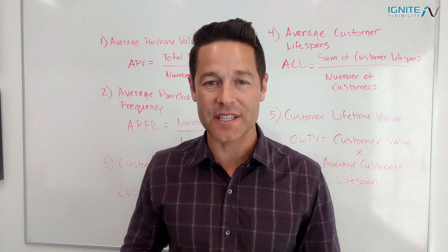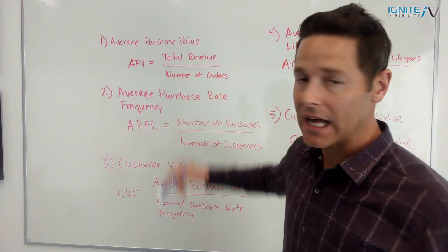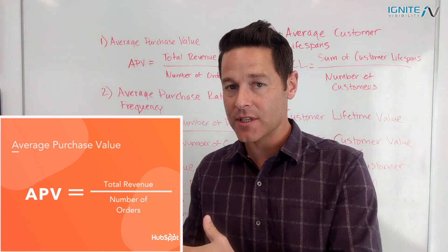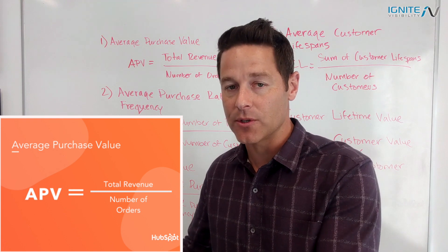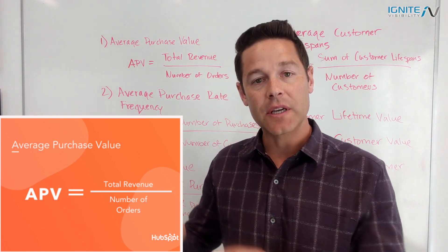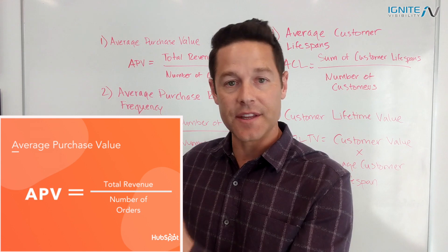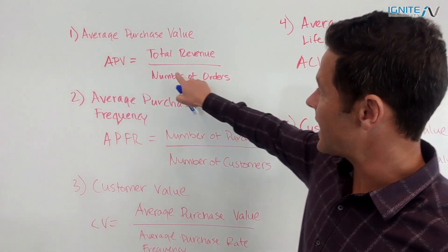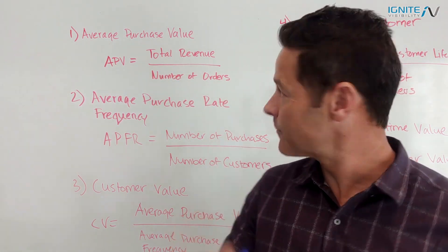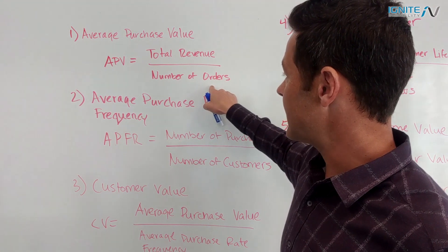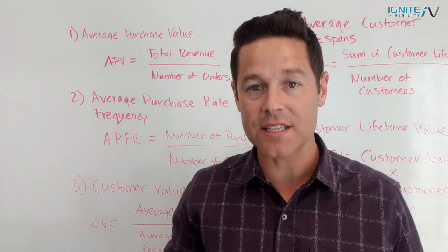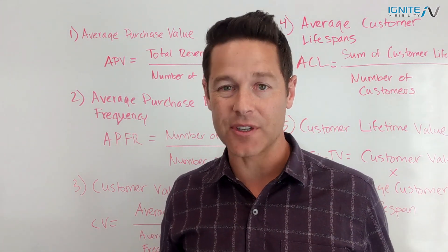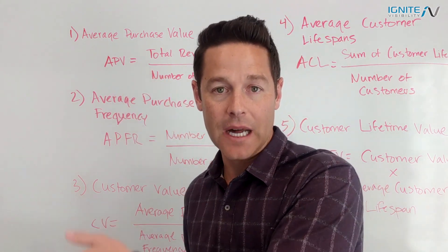Number one is average purchase value. Average purchase value is the average amount that somebody spends when they make a purchase. That's really important because you can know that number and back it into things like your return on ad spend. Average purchase value is calculated as total revenue divided by the number of orders — that tells you how much the average purchase is across all purchases. You can use that to associate an amount of money with a goal.